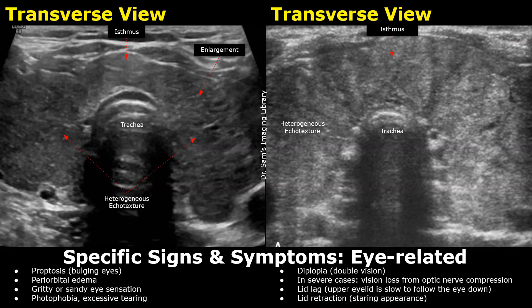First, we will have a look at the specific signs and symptoms related to Graves' disease. It has many eye-related signs and symptoms. Proptosis refers to bulging eyes, and it is seen in many Graves' disease patients. There can also be periorbital swelling or edema, and gritty or sandy sensations in the eye may also occur.